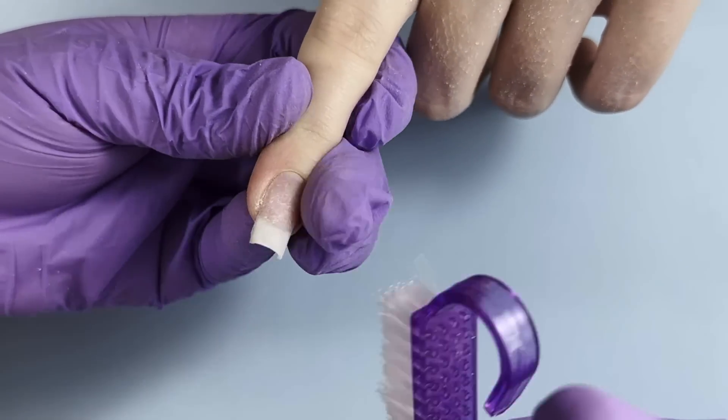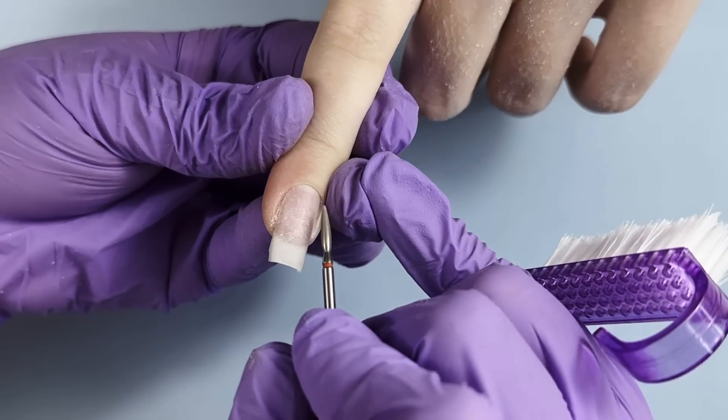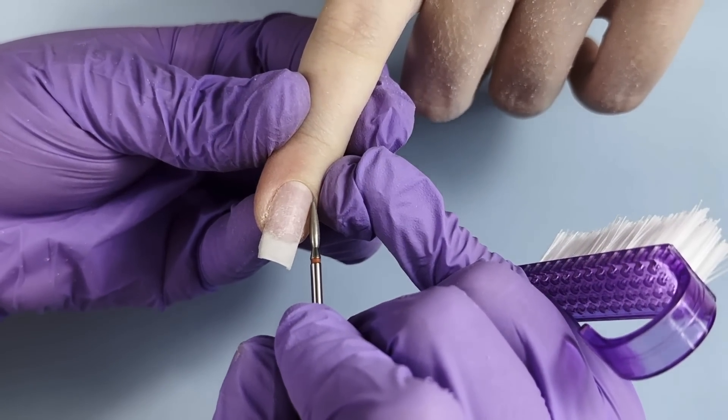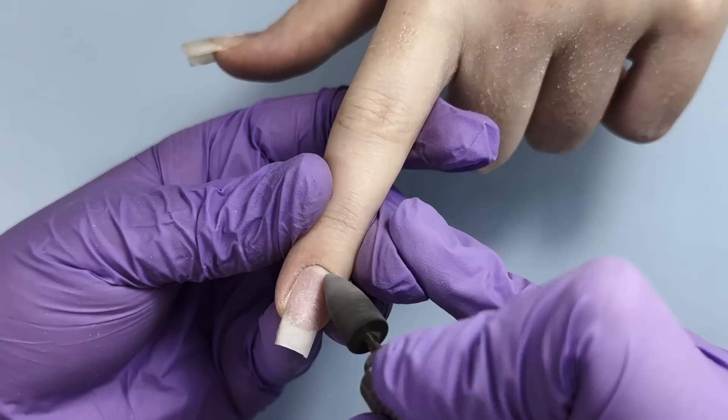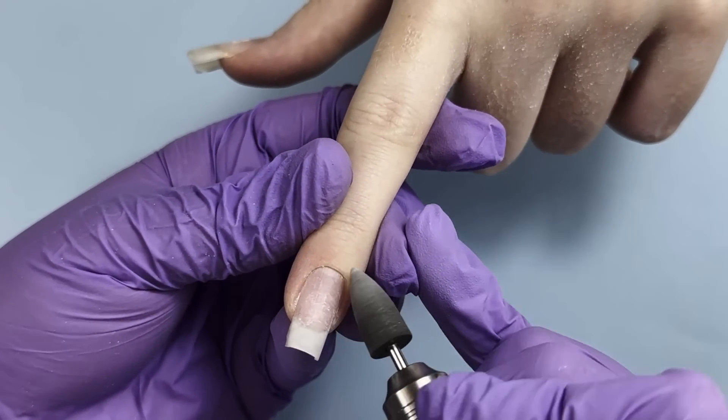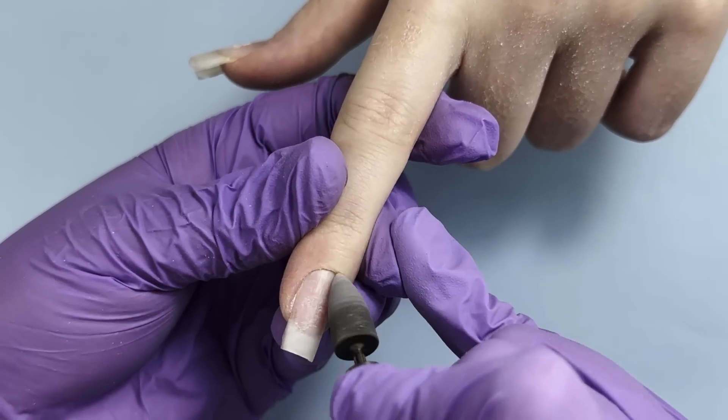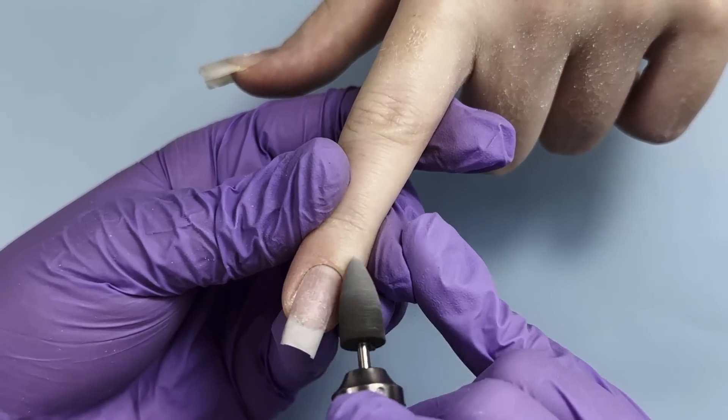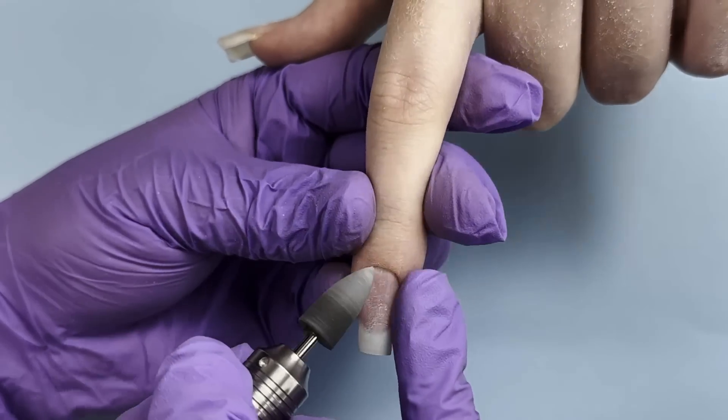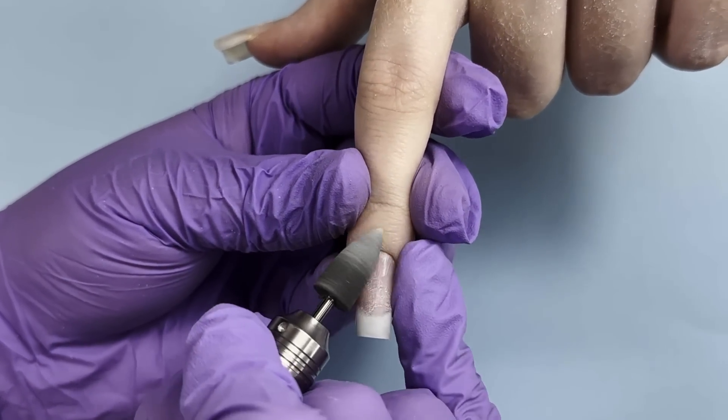When you're cleaning the sidewalls and the cuticles, you may notice that there is some dust that is covering the nail and you cannot really see what's going on. So make sure you clean it with the brush so you will see what's going on. After that I'm going to use a soft buffing bit to buff the cuticles and some remaining dead tissue as well as the sidewalls.